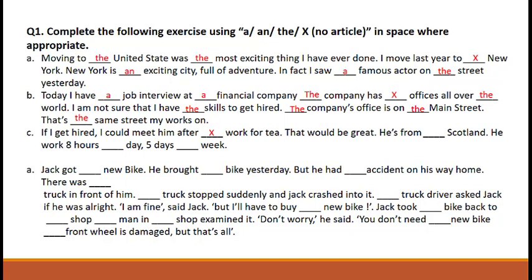'That would be great. He is from ___ Scotland.' Again, no article will come before Scotland because it is the name of a country. 'He works 8 hours ___ day, 5 days ___ week.' In both blanks, 'a' will come as 'day' and 'week' are singular nouns. Students, the second and third paragraphs are your homework. We will check it when you get back to school. Now check your answers with the solutions provided to you.